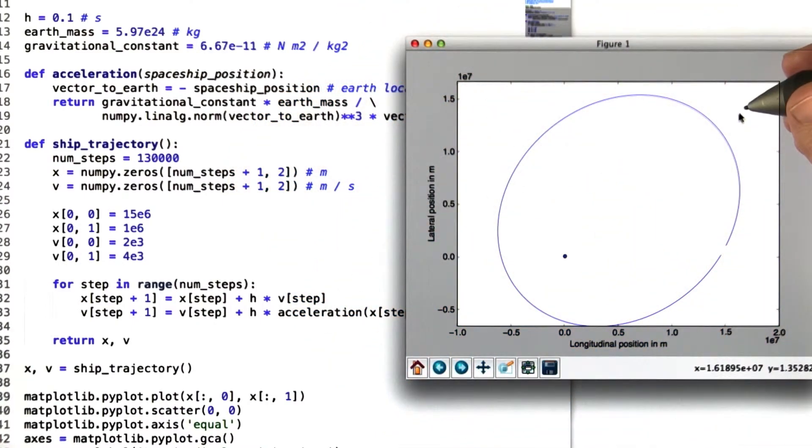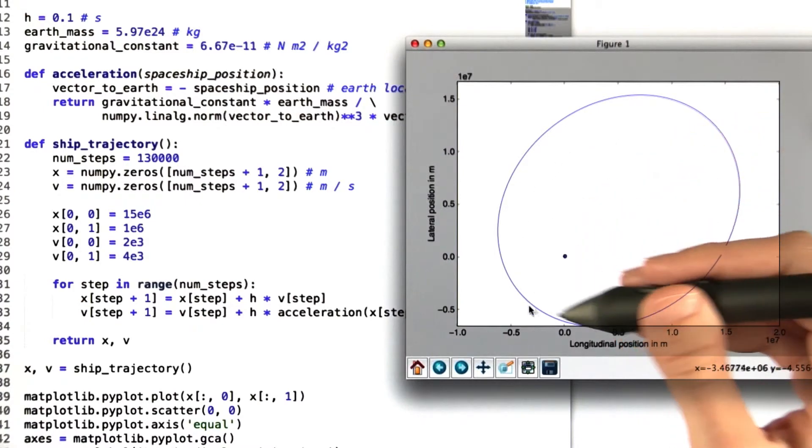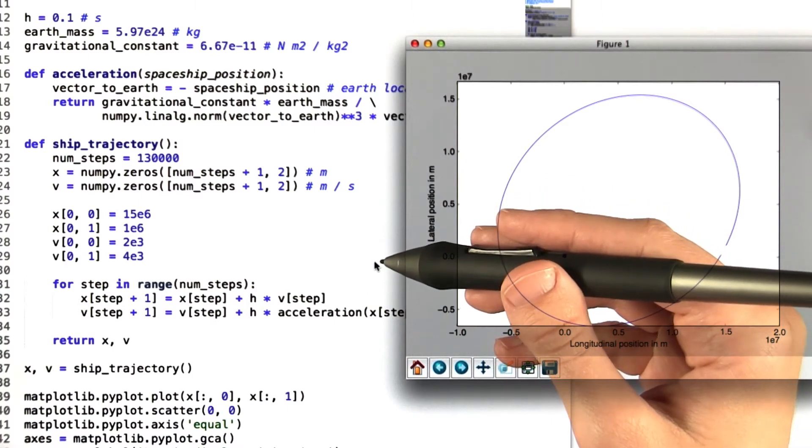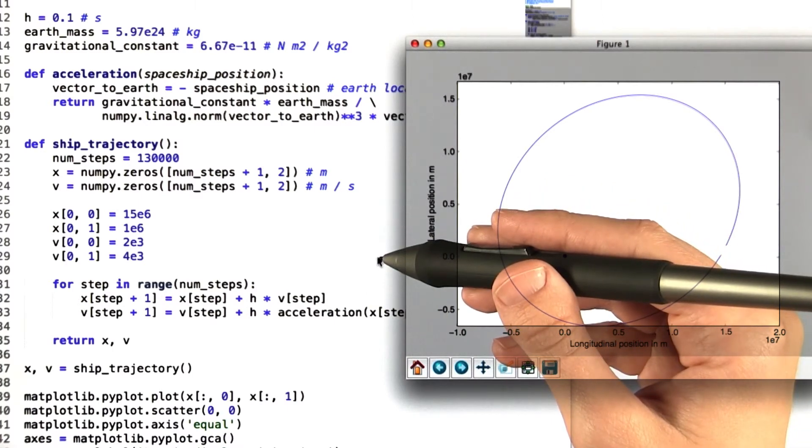At first it might look pretty similar to what we had after we ran the program the first time. However, if you examine the end of the trajectory a little bit more closely, you can see that this tail looks like it's actually going to intersect with the beginning. This time it actually looks like the ellipse might close, which we remember is what the trajectory in real life would look like. This is a great example of how changing the step size when using the forward Euler method can greatly decrease the error in the results we produce.